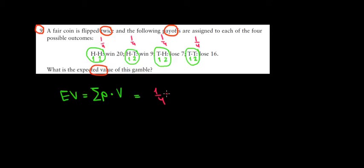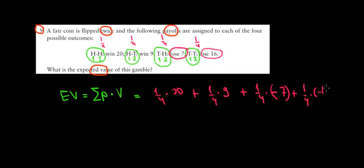So we have 1 over 4 times a result of 20, a payoff of 20, plus 1 over 4 probability times a payoff of 9, win 9 meaning positive 9, plus 1 over 4 times lose 7 so we would have a negative 7, plus 1 over 4 times lose 16 meaning we would have a negative 16.